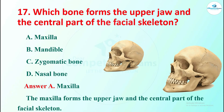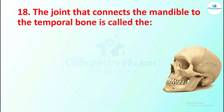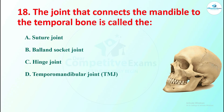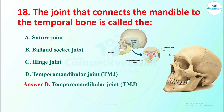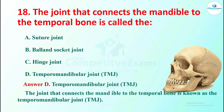Question 18: the joint that connects the mandible to the temporal bone is called what? Options are suture joint, ball and socket joint, hinge joint, or temporomandibular joint (TMJ). The right answer is the temporomandibular joint, TMJ. The joint that connects the mandible to the temporal bone is known as the temporomandibular joint, TMJ.